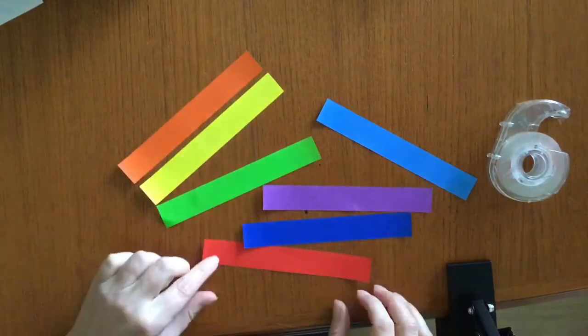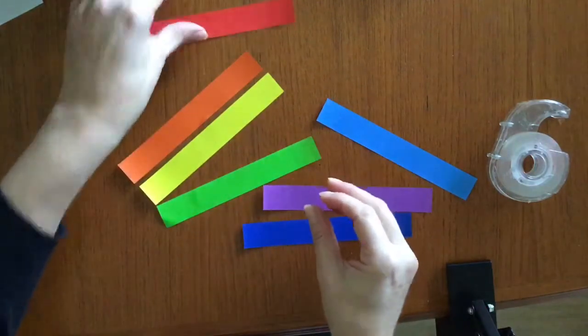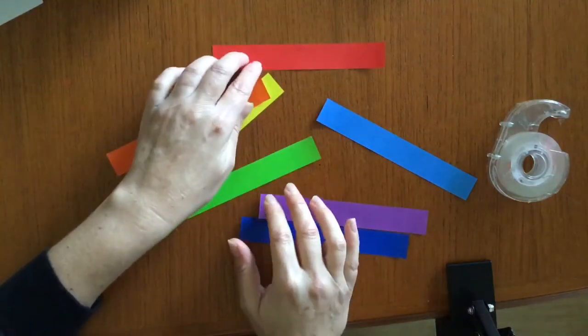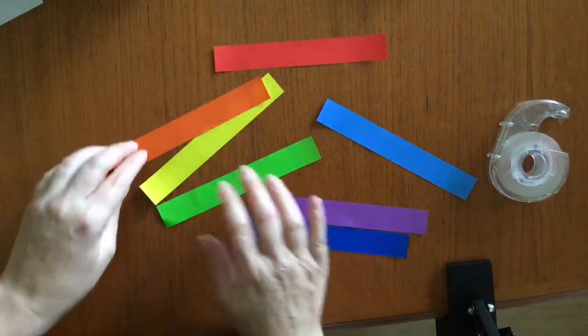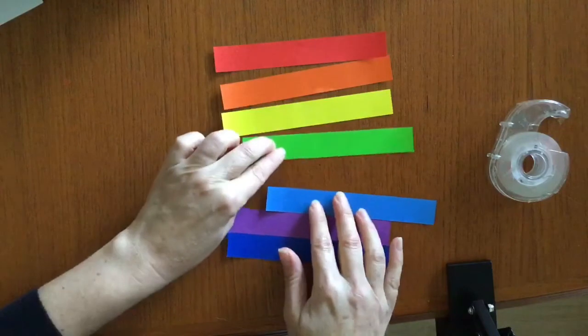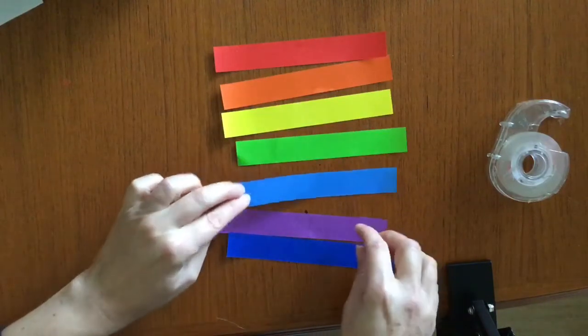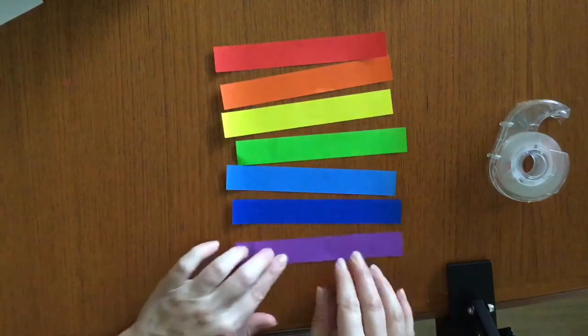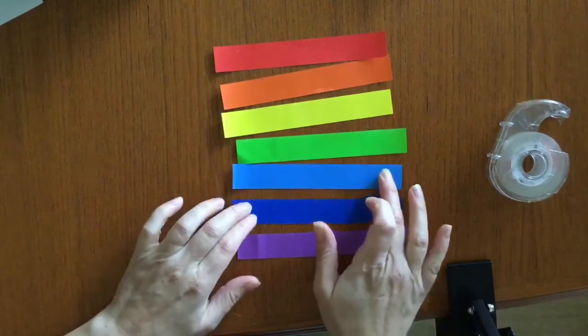So I've done the order of the rainbow so we go ROYGBIV: red, orange, yellow, G for green, blue - we go light blue then dark blue - then violet.